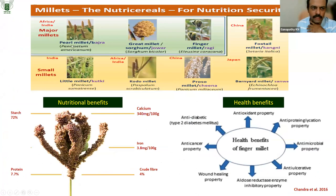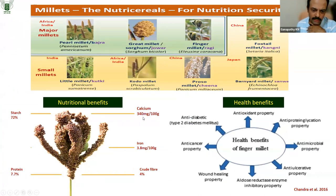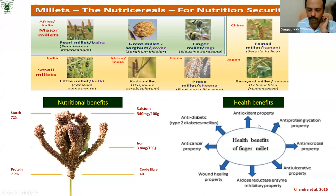Among millets — pearl millet, jowar, and finger millet — finger millet has the highest area as well as consumption, alongside different small millets. The key nutritional benefit is the quantity of calcium present per 100 grams of grain, which is 15 to 20 times higher than other cereals. There are many reported health-benefiting properties in this crop across literature, giving it a number of nutritional benefits.